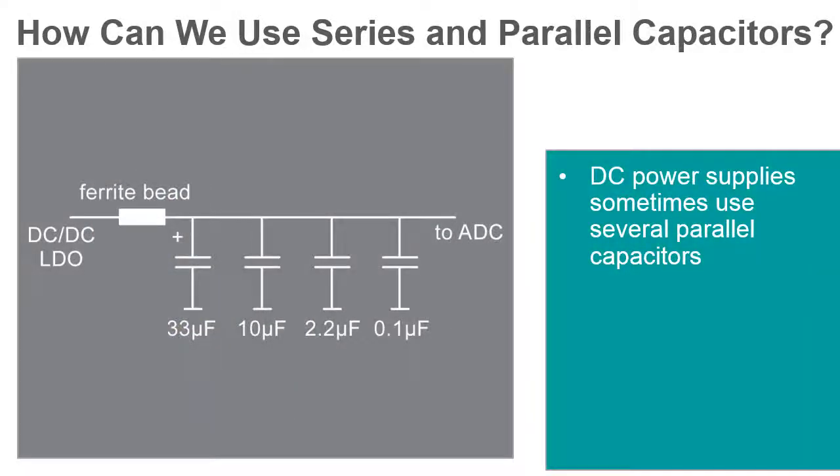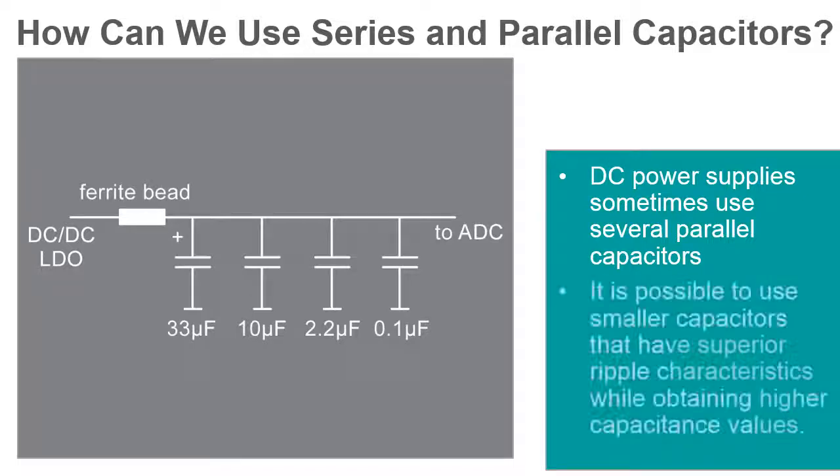DC power supplies sometimes use several parallel capacitors in order to better filter the output signal and eliminate the AC ripple. By using this approach, it is possible to use smaller capacitors that have superior ripple characteristics while obtaining higher capacitance values.